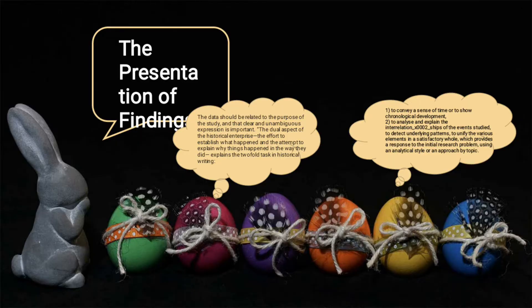The presentation of findings. The data should be related to the purpose of the study, and clear and unambiguous expression is important. The dual aspect of the historical enterprise involves the effort to establish what happened and the attempt to explain why things happened in the way they did, explaining the twofold task in historical writing. One: to convey a sense of time or to show chronological development. Two: to analyze and explain the interrelationships of the events studied, to detect underlying patterns, to unify the various elements in a satisfactory whole, which provides a response to the initial research problem, using an analytical style or an approach by topic.